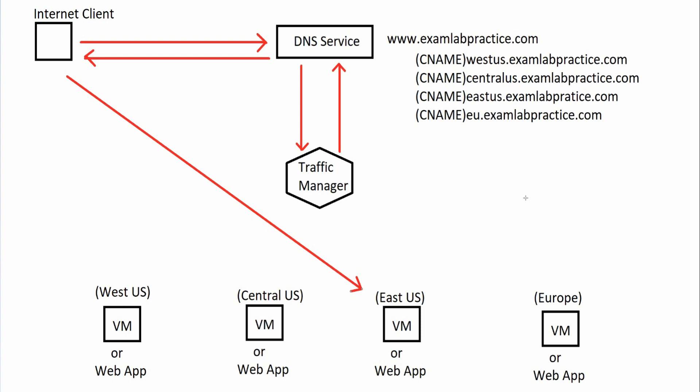That is the concept behind how the traffic manager is configured. The main thing it does is work in conjunction with the DNS service to know which records need to be passed based on your endpoints — whether you've got one in West US, Central US, East US, Europe, or wherever. I only drew four locations here, but in a much bigger environment you could have endpoints all over the world. Traffic Manager's job is to communicate with DNS to reflect which endpoint is going to be closest to the client.